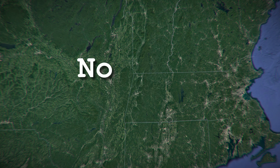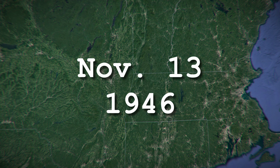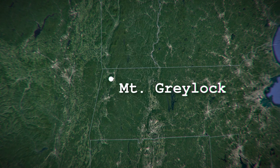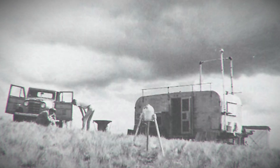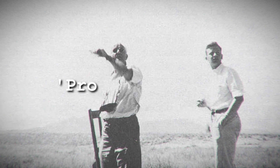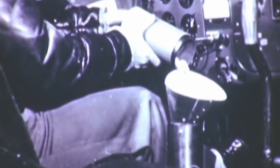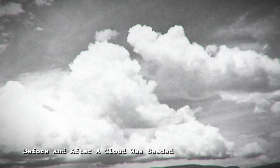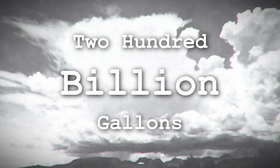The first attempt to seed a cloud was on November 13, 1946, in upstate New York. Schaeffer and pilot Curtis Talbot were able to cause snow to fall near Mount Greylock in western Massachusetts after they dumped six pounds of dry ice 14,000 feet above a four-mile-long cloud. Although the snowfall was insignificant, this was a big step forward in weather modification. During the late 1940s, many experiments were carried out over the New Mexico desert under what Schaeffer dubbed Project Cirrus. They experimented with dry ice, silver iodide, and even frozen water, reportedly starting dozens of rainstorms — with one releasing about 200 billion gallons of water.